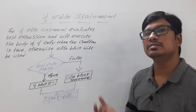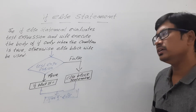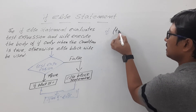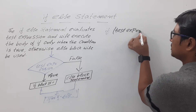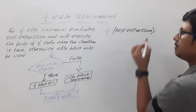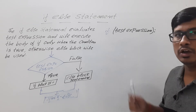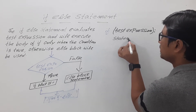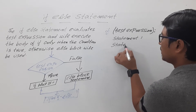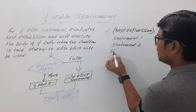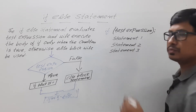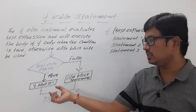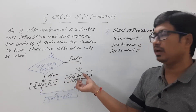Now let me write the syntax for if-else. We will have 'if' followed by a test expression or condition, and then a colon. Once you keep the colon and press enter, indentation will start. You can have statement one, statement two, statement three — these are the three statements in the if block. In Python, indentation separates the blocks of statements in if and else.